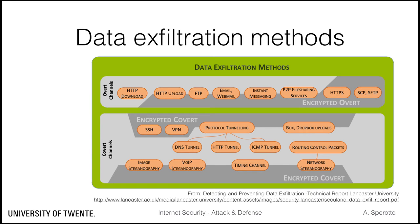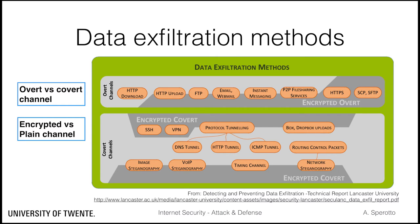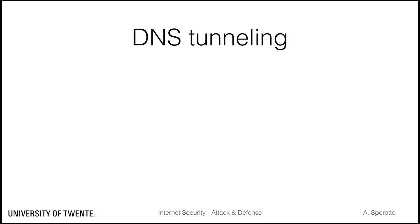There are several methods for exfiltrating data, which can be generally categorized in two orthogonal ways. First, the channel can be either overt or covert. Overt channels are channels also used by other computers for transferring data between locations — HTTP or FTP are some examples. An overt channel is likely to be monitored, but the advantage is that the target network allows its use. In a covert channel, information is intentionally hidden, for example by embedding it into another protocol, as happens in tunneling. Both overt and covert channels can be encrypted to add an additional layer of protection against detection.